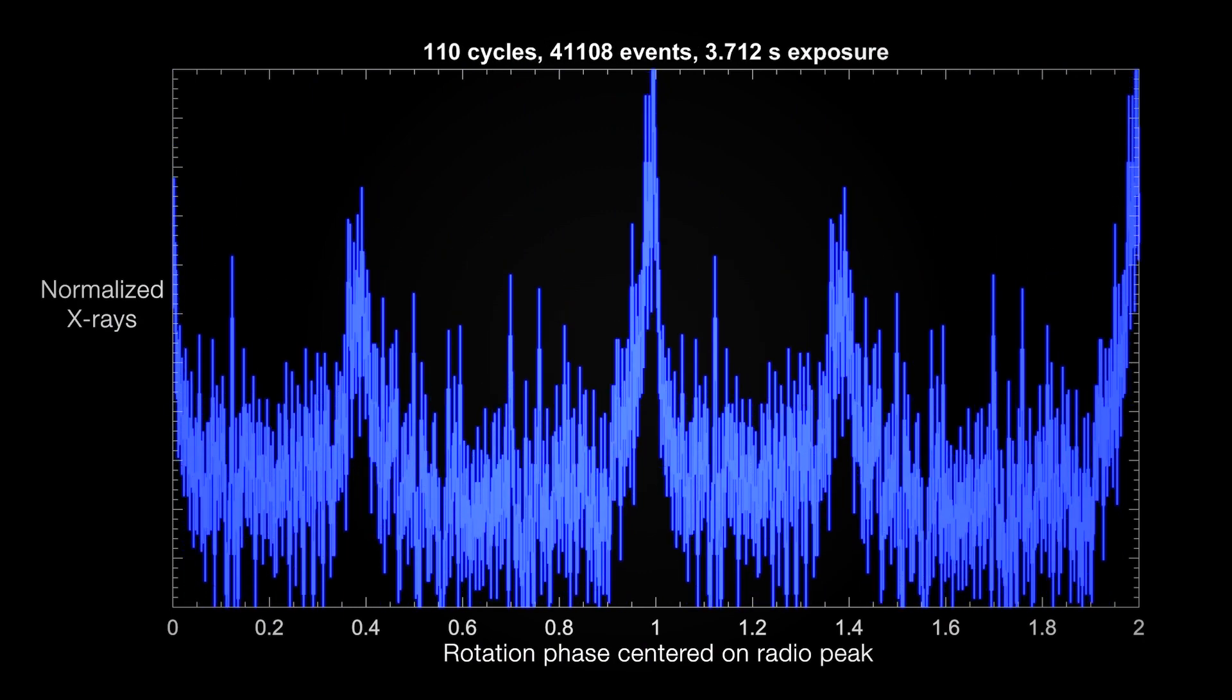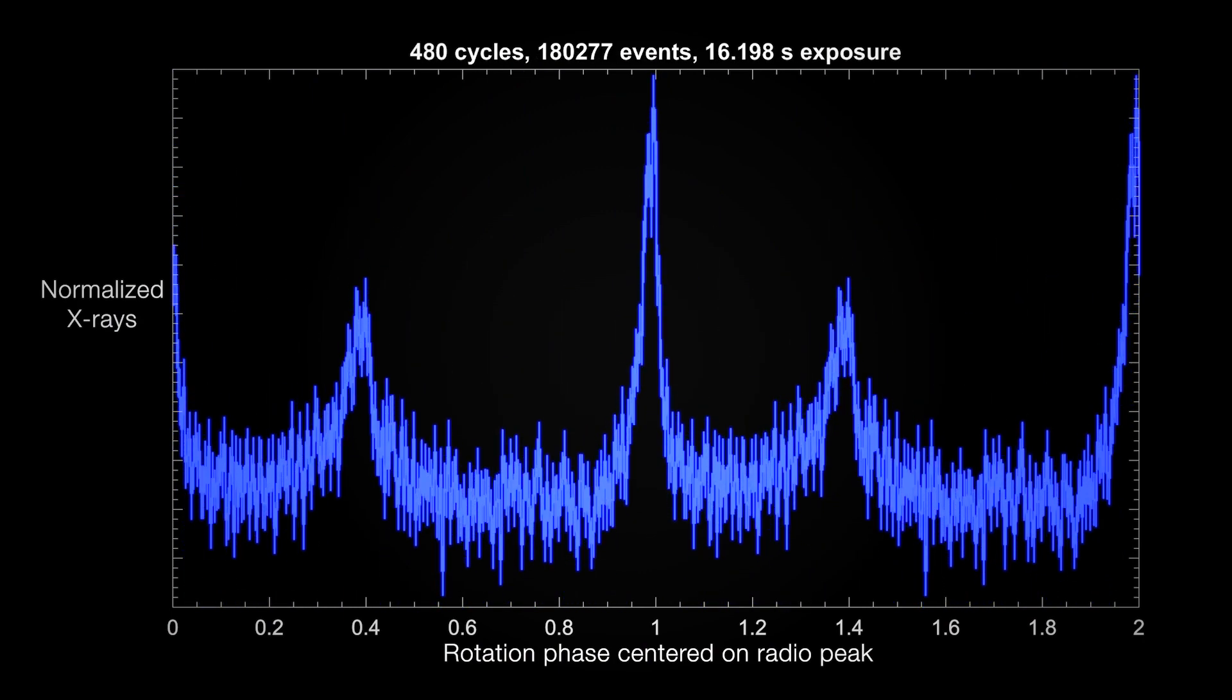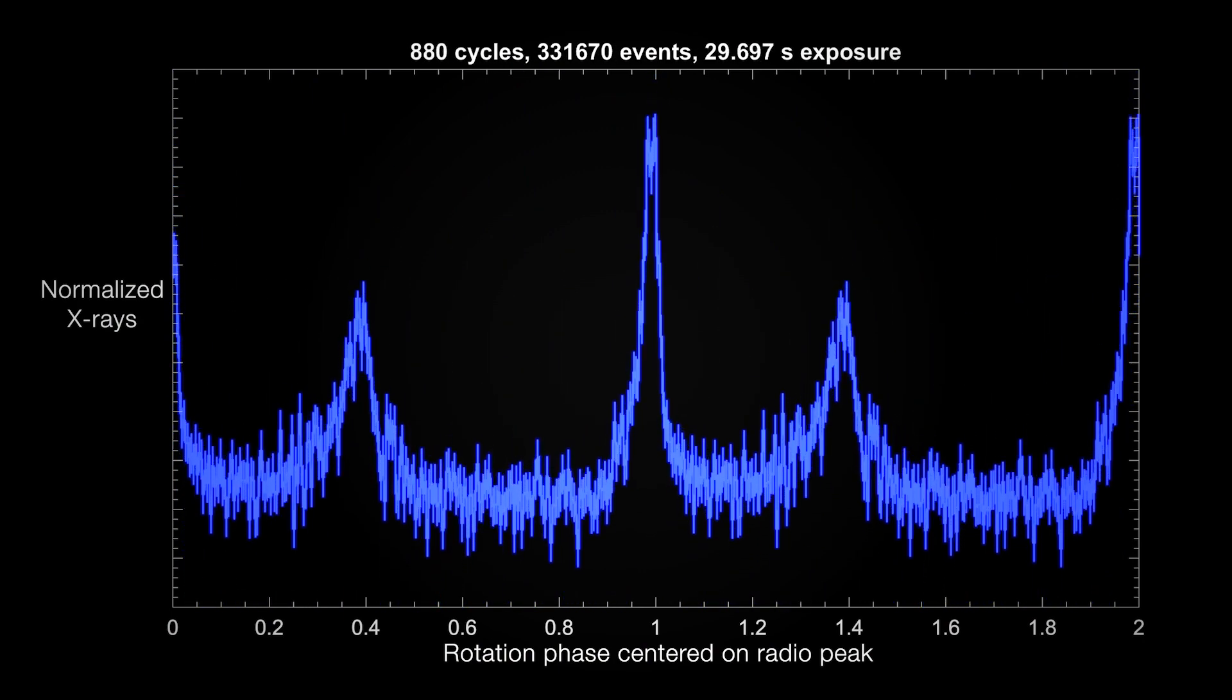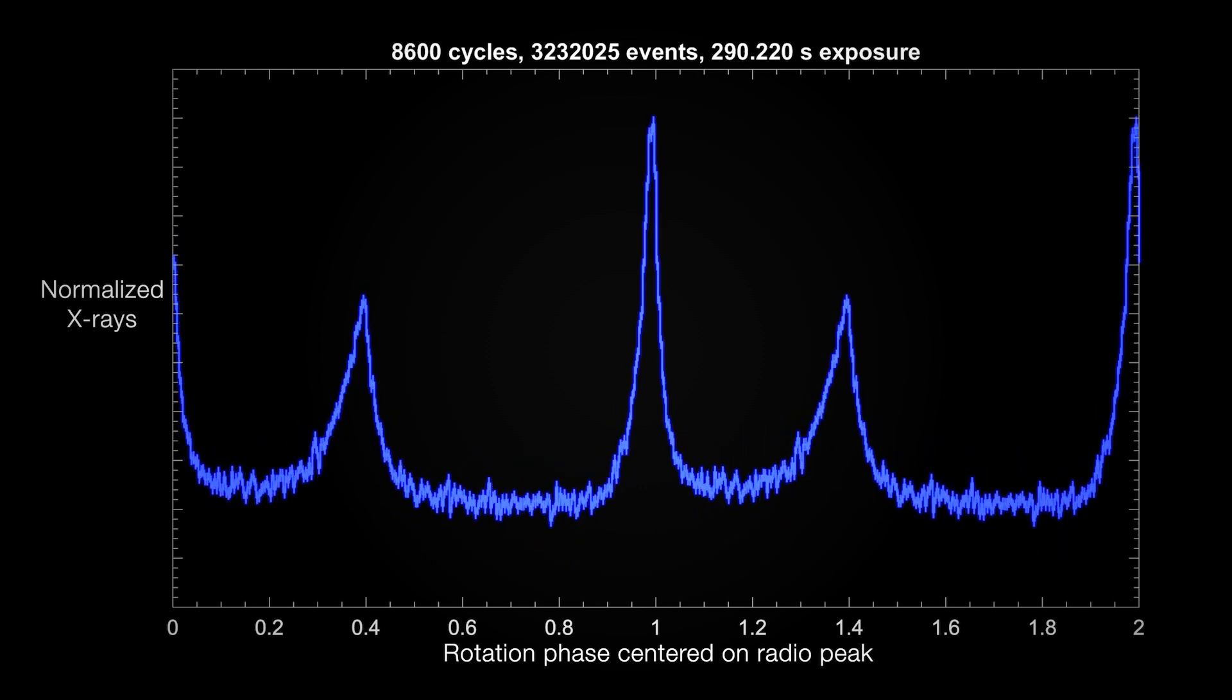Observing the Crab simultaneously with NICER and radio telescopes in Japan, astronomers captured data over some 3.7 million rotations.